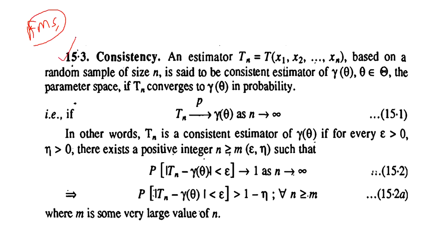The formal definition of consistency: an estimator Tₙ, which is a function of sample values based on a random sample of size n, is said to be a consistent estimator for γ(θ), where θ belongs to the parametric space Θ, if Tₙ converges to γ(θ) in probability as n tends to infinity.